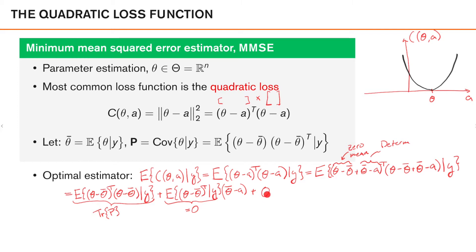The first three terms do not depend on a. However, the fourth term does — it is theta bar minus a transposed times theta bar minus a, which is deterministic, so taking the expected value is trivial. The posterior expected loss is therefore the trace of P plus this term. To minimize with respect to a, we simply set a equal to theta bar, which makes the second term zero. It is also easy to show this is a unique minimum.